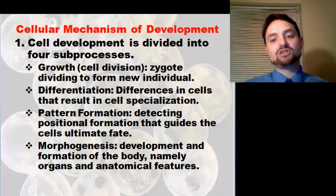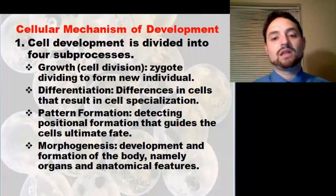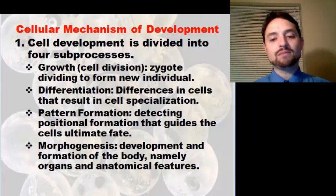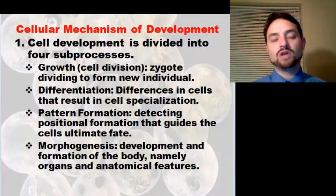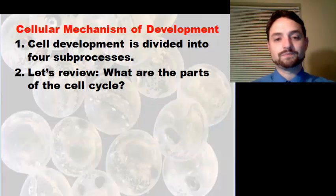Pattern formation involves detecting positional information that guides a cell's ultimate fate — we'll look at that later. And then morphogenesis is the development and formation of the body, namely organs and anatomical features, which will be our ending point for this chapter.